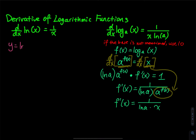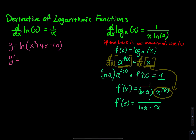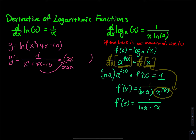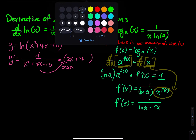Example 1: y = ln(x² + 4x − 10). Using the chain rule, y′ = 1/(x² + 4x − 10) times the derivative of the inside, which is 2x + 4. In compact form, the numerator is 2x + 4 over x² + 4x − 10.